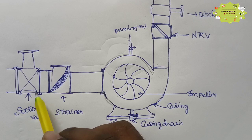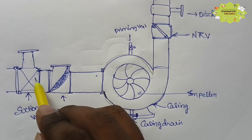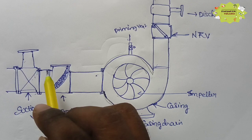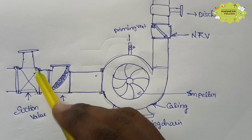This is called the suction valve. We have to operate it — usually gate valves are used. The suction valve can be closed and opened to isolate the pump. So we use this suction valve.